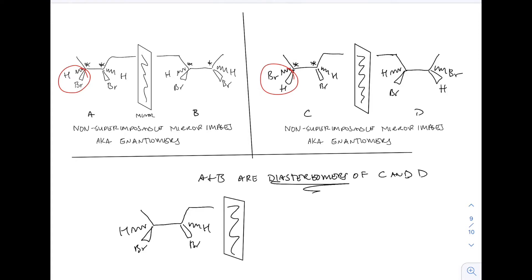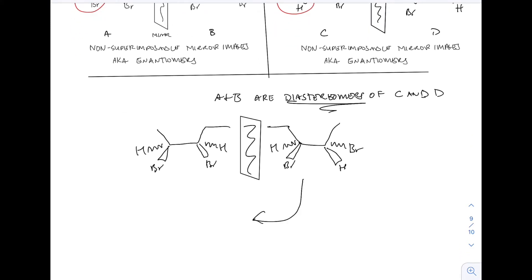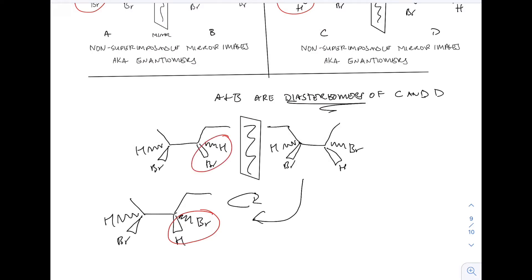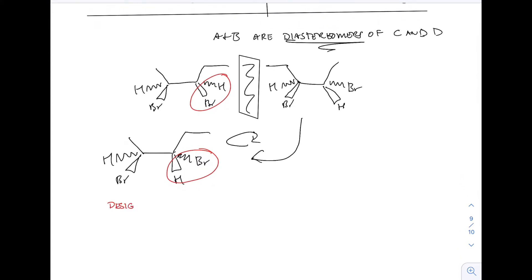Looking at compound A, you can see both bromines have wedges facing toward us. Now I'm drawing compound D as well. You can see they are not mirror images of one another, and if I rotate it, we can also see that they are not superimposable. The bromine is a wedge on compound A and a dash on compound D — so they are non-superimposable, non-mirror images of one another. That confirms A and B are diastereomers of C and D.